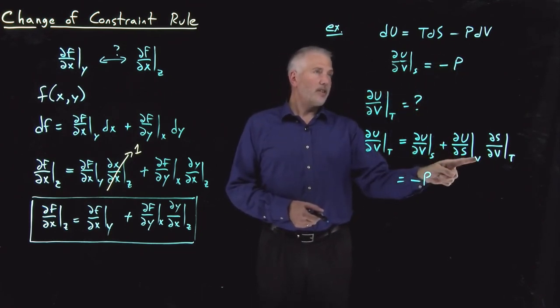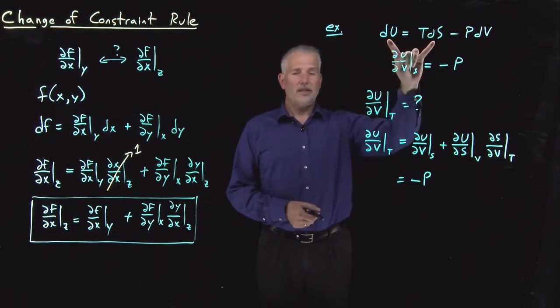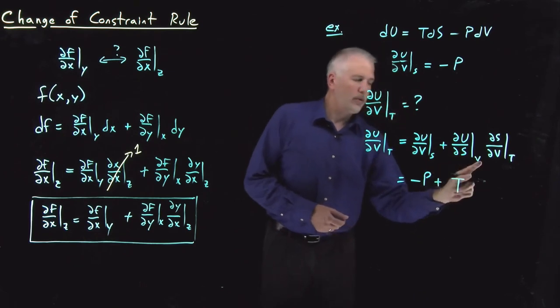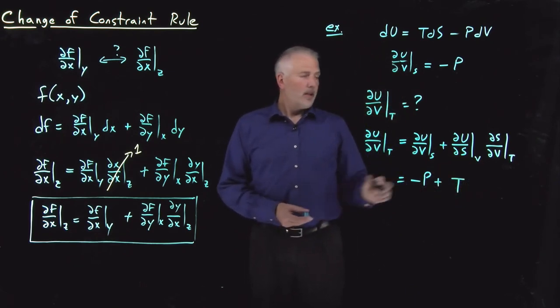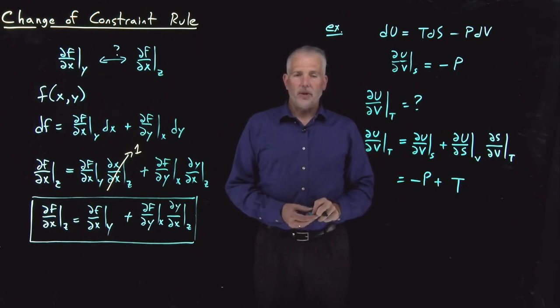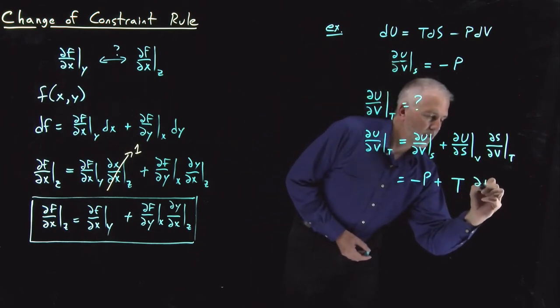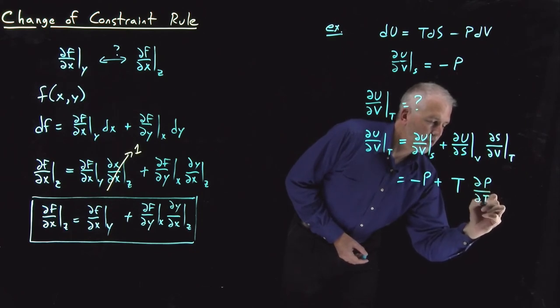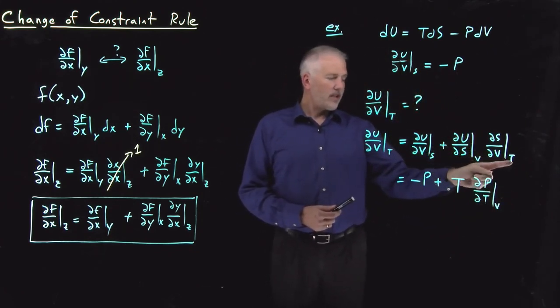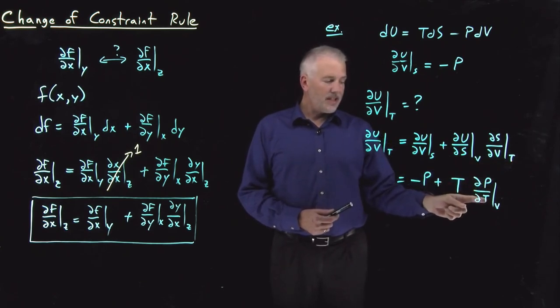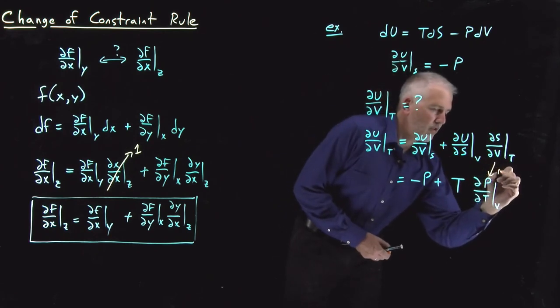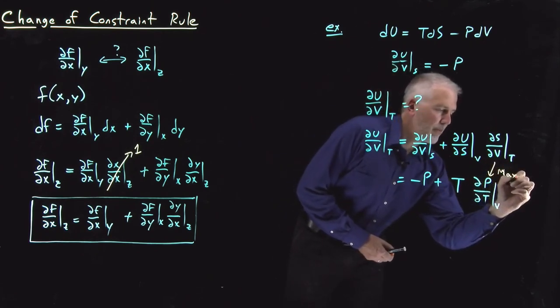Likewise, ∂u/∂S at constant V, ∂u/∂S while holding V constant, that's the temperature. So this term, this derivative is just temperature. Lastly, ∂S/∂V at constant T, that's also one that we know something about. A Maxwell relation reminds us that ∂S/∂V at constant T is the same as ∂P/∂T at constant V. So that particular relationship came from a Maxwell relation.